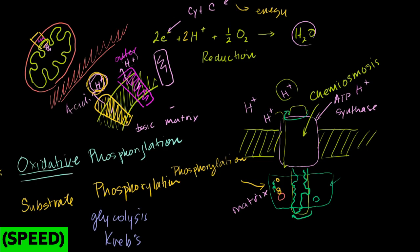And this is where you have an enzyme directly helping to produce the ATP without any type of chemiosmosis or proton gradient.